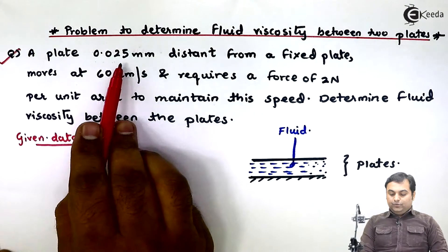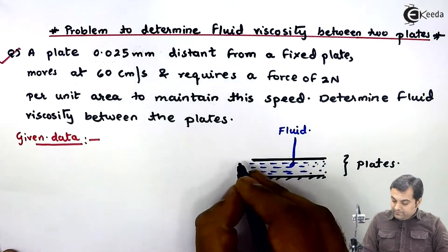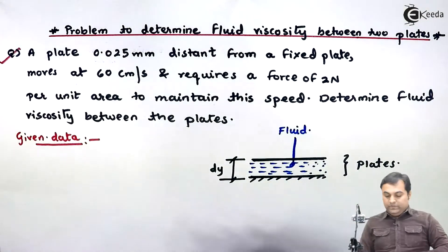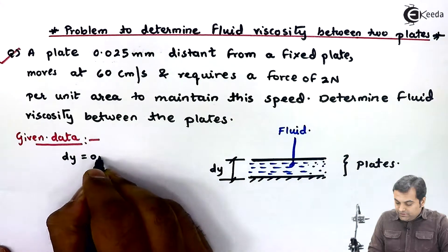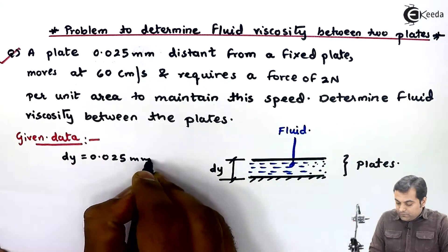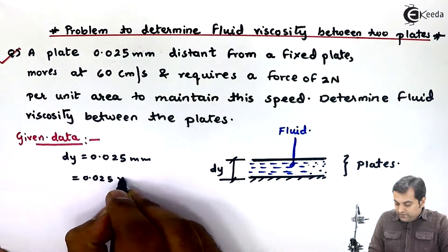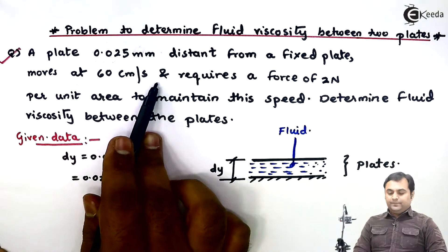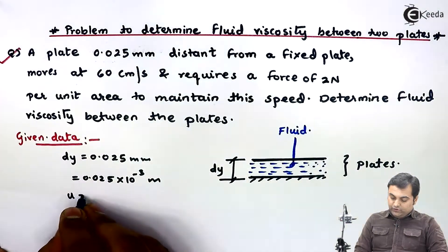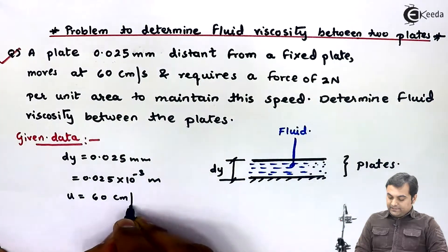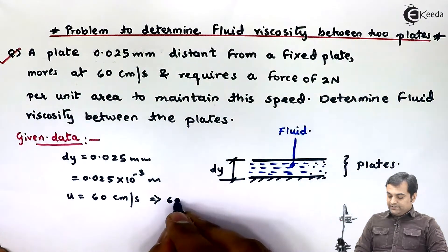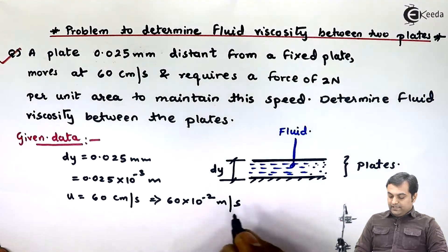Now, the distance between the plates is given — I'll denote it by dy. So dy is 0.025 mm, or 0.025 into 10 raise to minus 3 meters. Next, the velocity is given: u is equal to 60 centimeters per second, which is 60 into 10 raise to minus 2 meters per second.